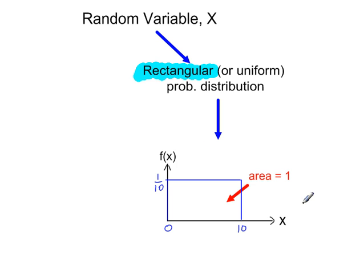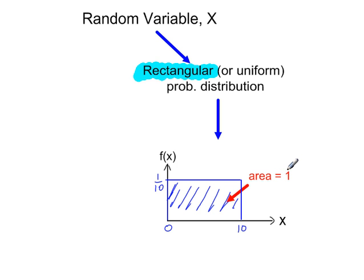Here's a rectangular probability distribution, and we can see that it takes values of x between 0 and 10. All values of x between 0 and 10 are equally likely. The total area underneath the graph is equal to 1. The width of the graph is 10, between 0 and 10, and the height is 1 tenth, because width times height should give an area equal to 1.